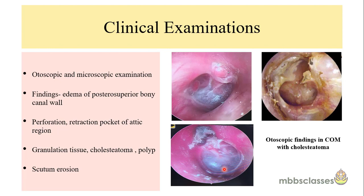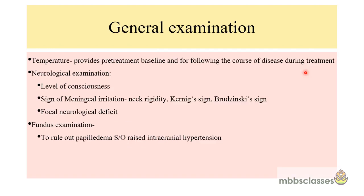Looking at these three otoscopic images: in the first, there is a defect in the attic region with a polypoid reddish mass protruding through it — this is granulation tissue presenting as a polyp from the attic region. In the second image, we can see keratin flakes and a retraction pocket in the attic region, along with a perforation in the pars tensa. In the third, there is attic perforation and erosion of the scutum.